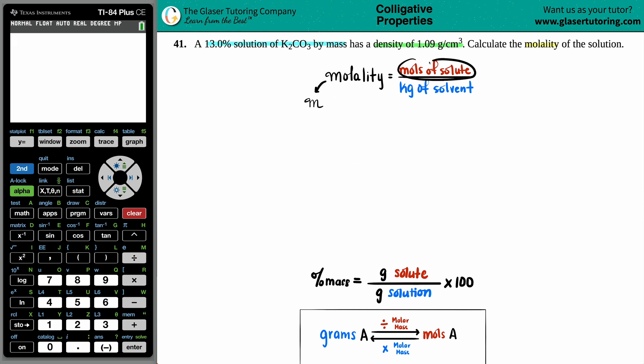Molality is always equal to the moles of the solute divided by the kilograms of the solvent. But they only gave me a percent here, right? And it's a percent by mass.